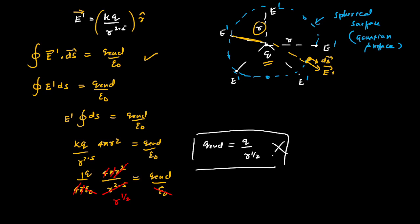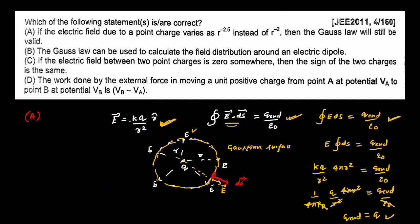Obviously we know that inside the Gaussian surface the actual charge is q, but the prediction from Gauss's law gives q enclosed = q over r to the power 1/2, which is absolutely wrong. Meaning we cannot use Gauss's law with this new field expression — Gauss's law becomes invalid. So for the first option, if the electric field due to a point charge varies as r^(−2.5), Gauss's law is not valid.